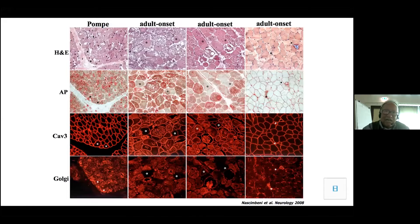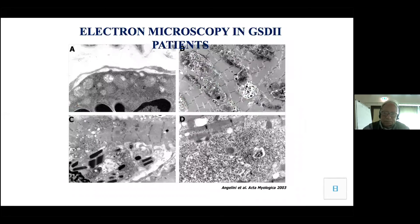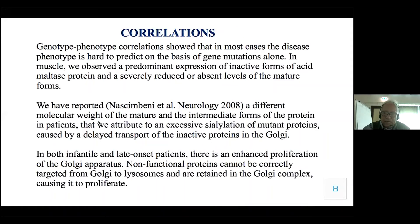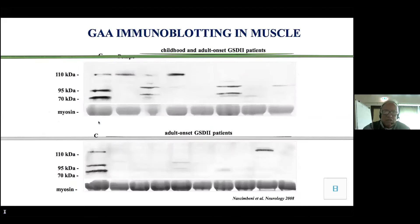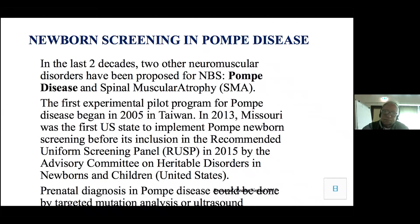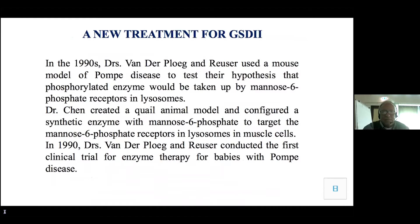Here is a study we did that is somewhat complex to explain. This is a child with Pompe. The stains shown are HNE, acid phosphatase, and caveolin-3. Caveolin-3 is interesting because it presents differently in the adult versus the infantile form.